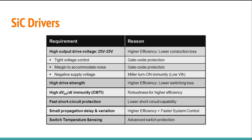Silicon carbide MOSFETs are efficient at higher switching frequencies. Therefore, they benefit from a higher peak drive current. A higher peak drive current results in a faster voltage and current transition, which reduces the switching loss.